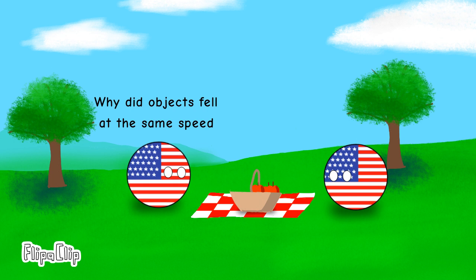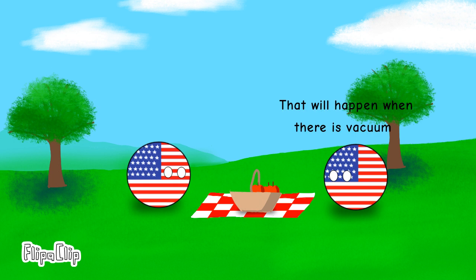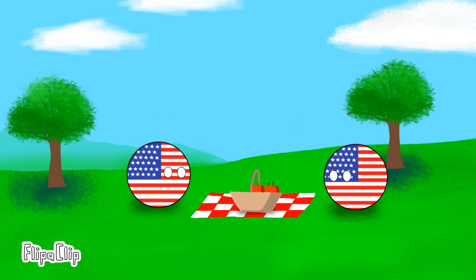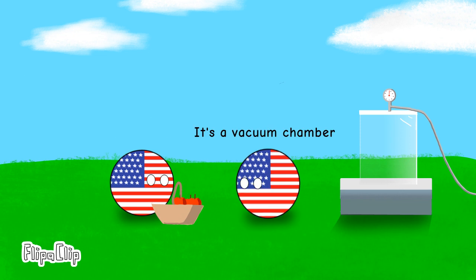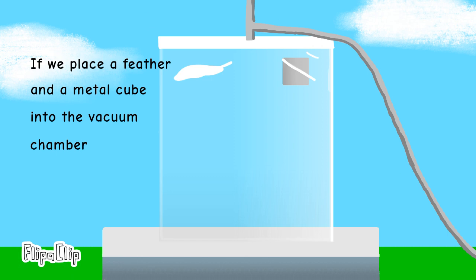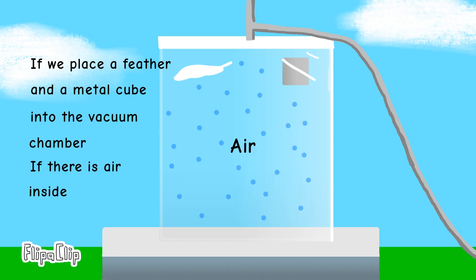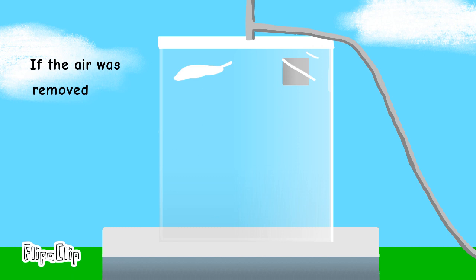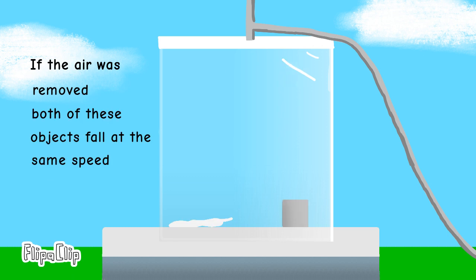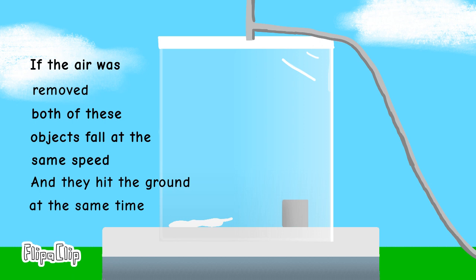Why do objects fall at the same speed? That will happen when there is a vacuum. Follow me. It's a vacuum chamber. If we place a feather and a metal cube into the vacuum chamber, if there are air particles inside, the feather falls slowly while the metal cube hits the ground first. If the air is removed, both of these objects fall at the same speed and hit the ground at the same time.